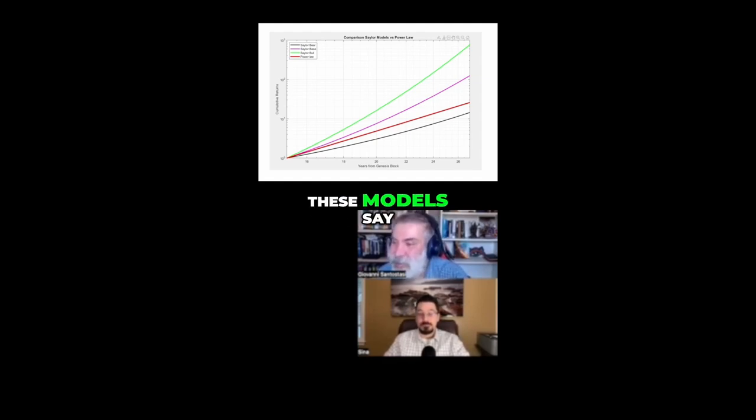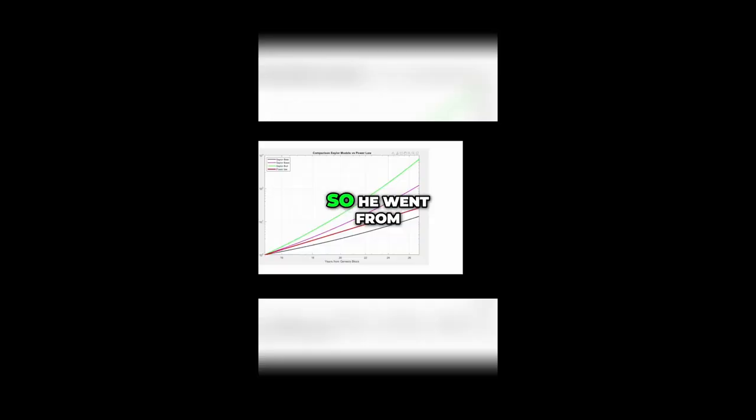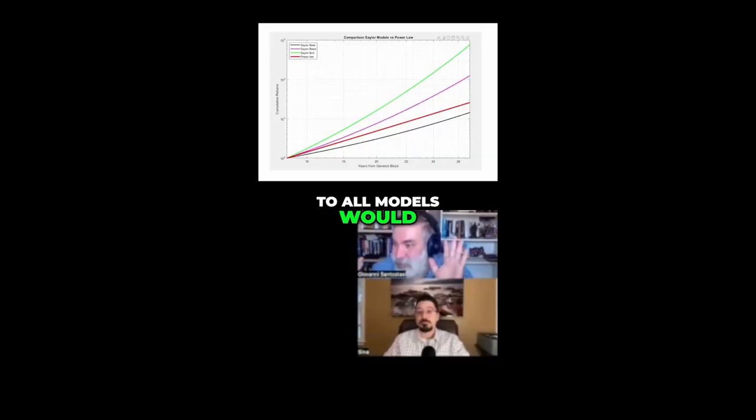So basically these models say, all of them say, you say I have a chance. All of them say this. So he went from no model is correct to all models will be true.